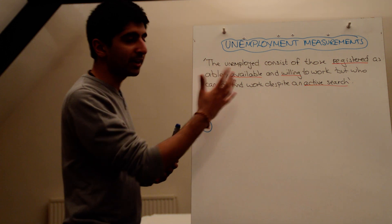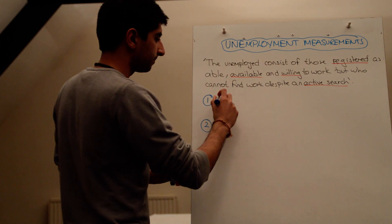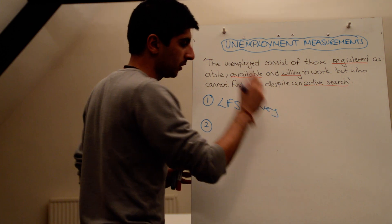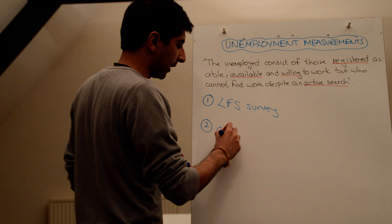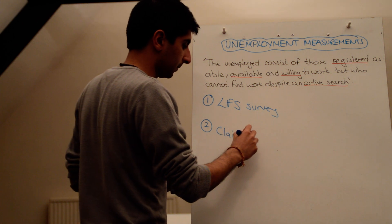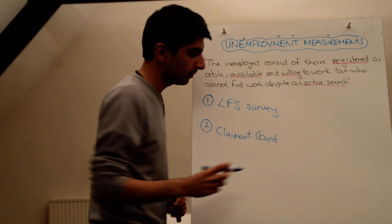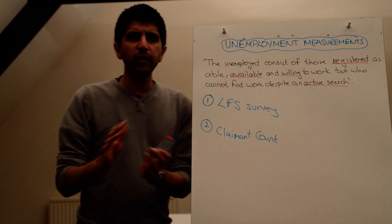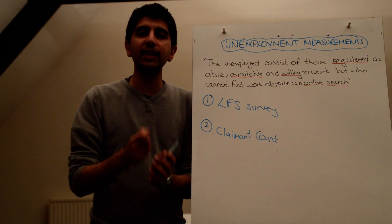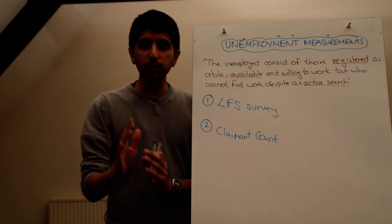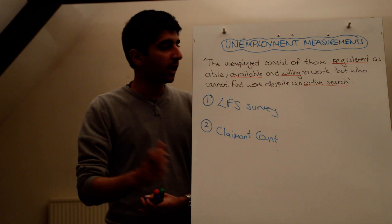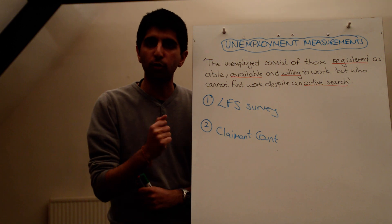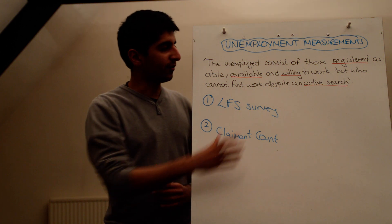There are two main types of measures of unemployment. We have the labour force survey, and we also have the claimant count. And this is all about unemployment in the UK. So, the labour force survey, very simply, is just a survey given out to households. And these households, these people, have to basically tick a box if they fit the definition of unemployment determined by the International Labour Organization.